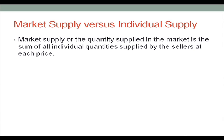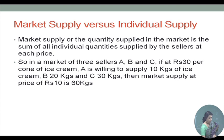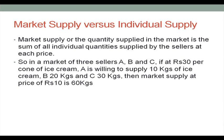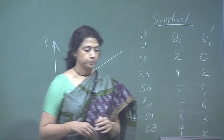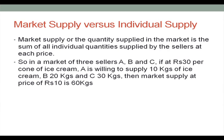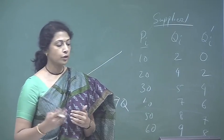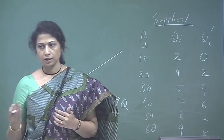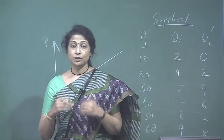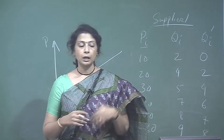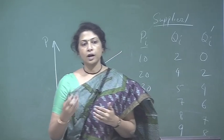Market supply is the sum of all individual quantities supplied by sellers at each price. In a market of three sellers A, B, and C, if at 30 rupees per cone A supplies 10 kgs, B supplies 20 kgs, and C supplies 30 kgs, then market supply at that price is 60 kgs. Note that a perfectly competitive market assumes far more than 2 or 3 suppliers — this example is just to illustrate how the market supply curve is determined.